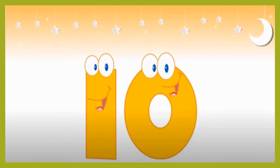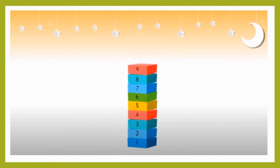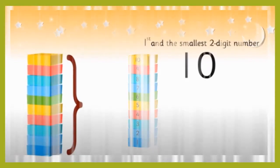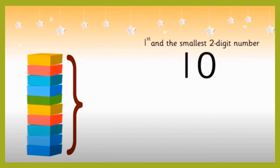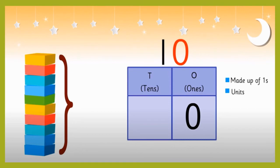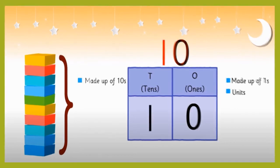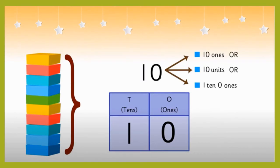Now let us learn about 10. Look, there are 9 blocks here, and one more makes 10 blocks. Number 10 is the first and smallest two-digit number. In a two-digit number, the digit on the right is written in the ones column, and the digit on the left is written in the tens column. We call it 10 ones, or 10 units, or 1 ten and 0 ones.